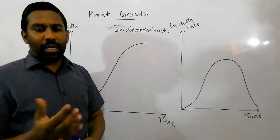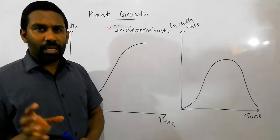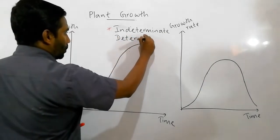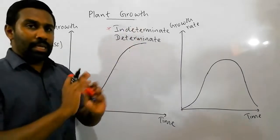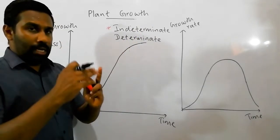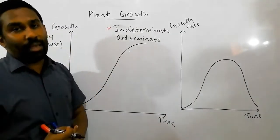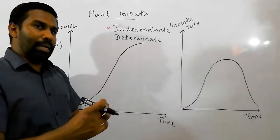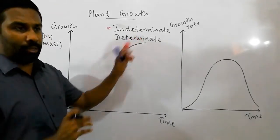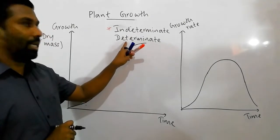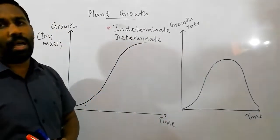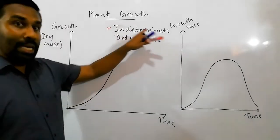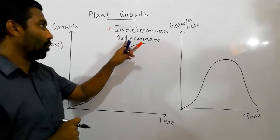However, some parts of perennial plants — such as flowers, fruits, and leaves — do not show indeterminate growth; they show determinate growth. Determinate means they grow within a particular period of the lifespan, reach a certain size, and then their growth stops. So in perennial plants, the whole plant shows indeterminate growth, but parts like flowers, fruits, and leaves show determinate growth.